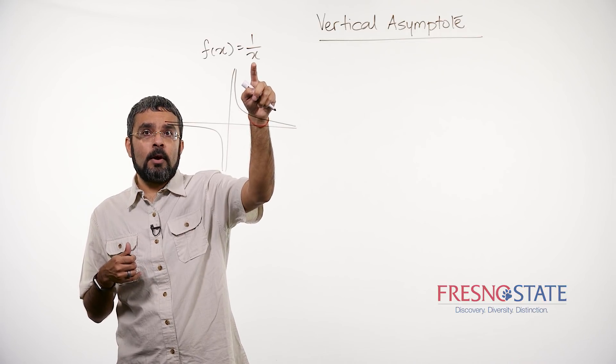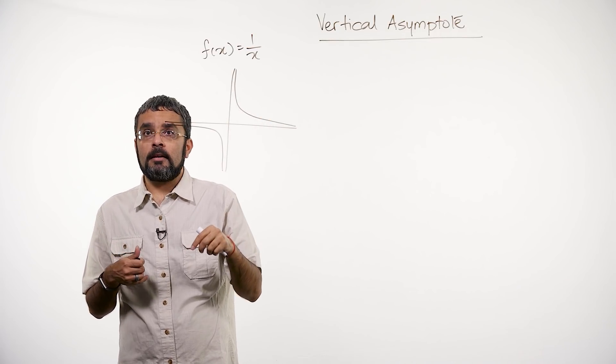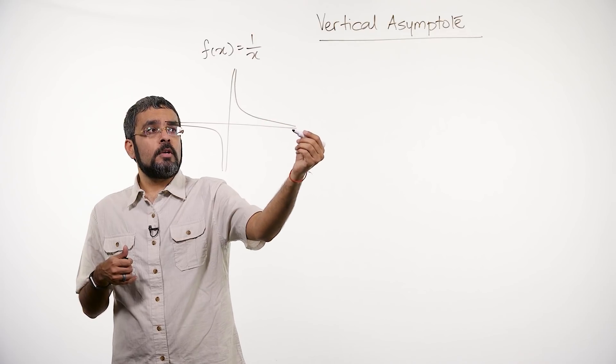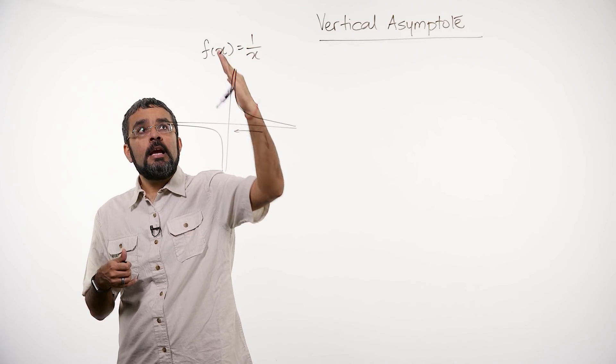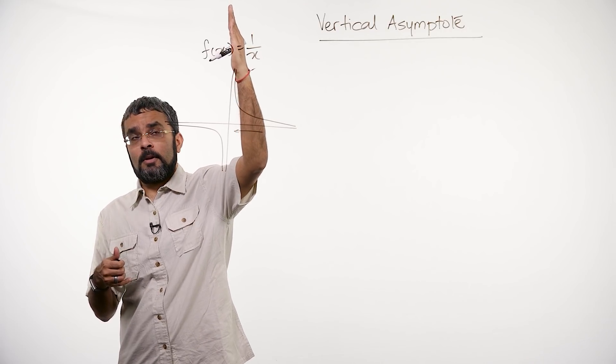Notice that at the point x equals 0, the function is not defined. But as I go closer to 0 in this direction, what's happening? My function values are going higher and higher. It almost becomes a vertical line, but not quite.